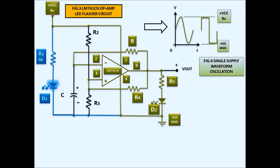This circuit can produce a square wave. The square wave generated by the circuit has a positive VCC of 9 volts and negative VCC equal to ground, which is negative 9 volts. You can see here the single-supply waveform oscillation with a zero or ground level, producing a positive half cycle and a negative half cycle at the output. Inside the op-amp circuit, a voltage phase shifter produces the non-inverting and inverting waveform.